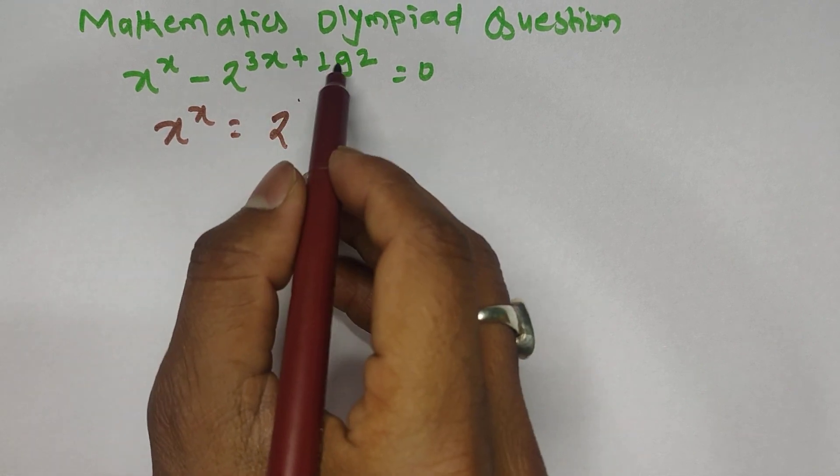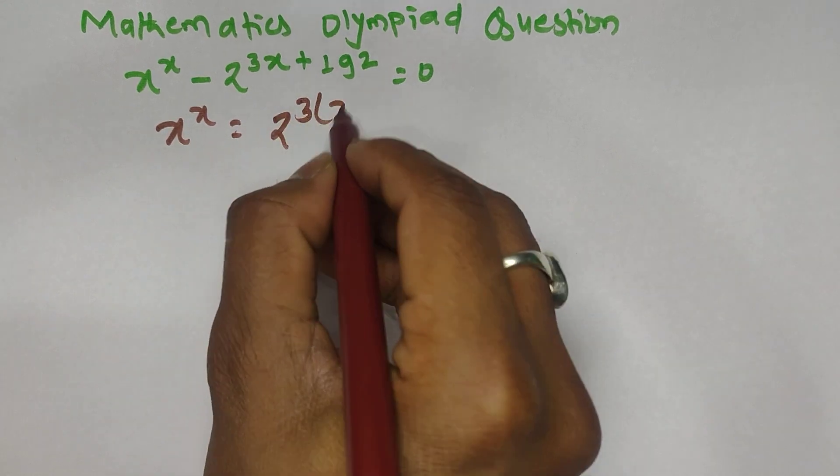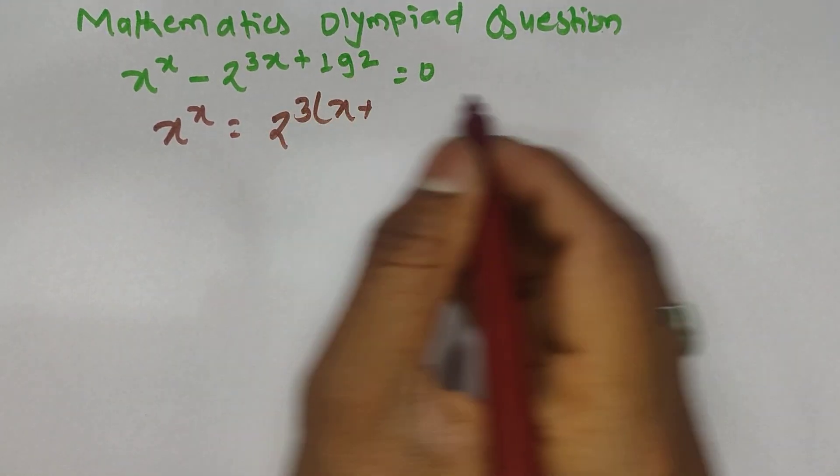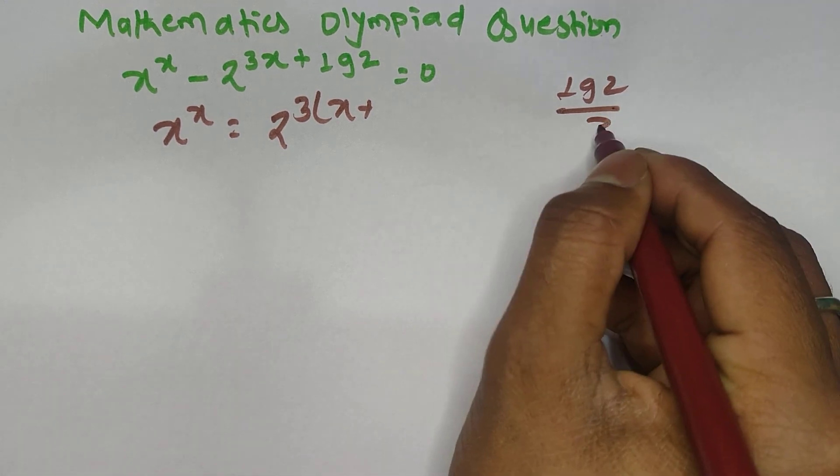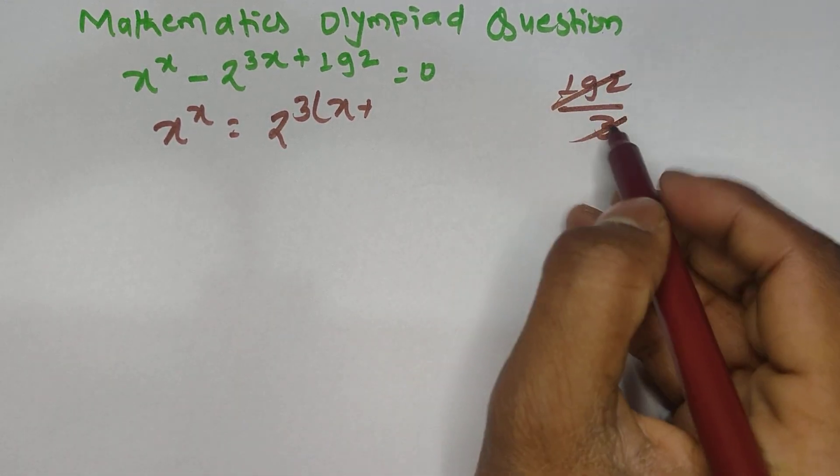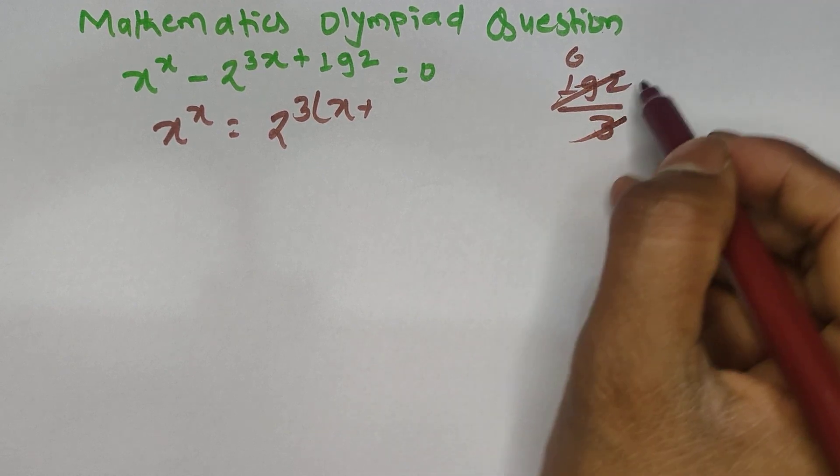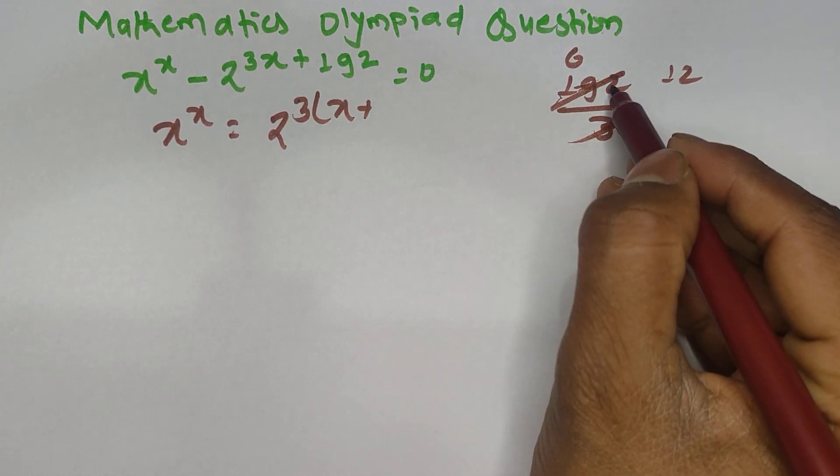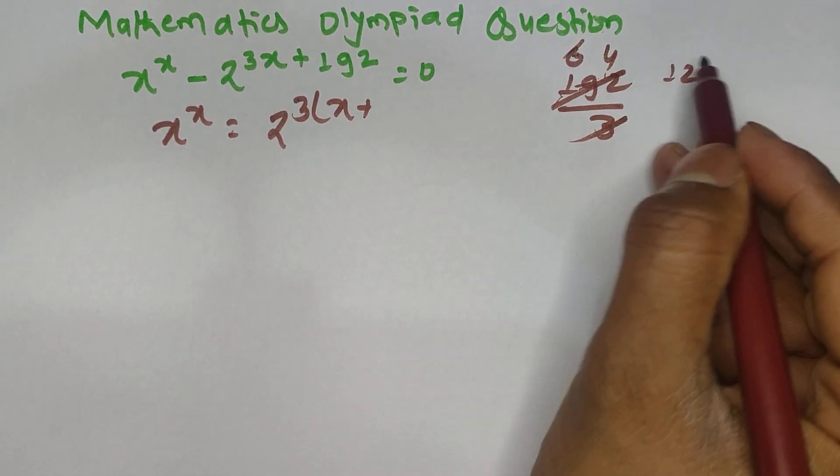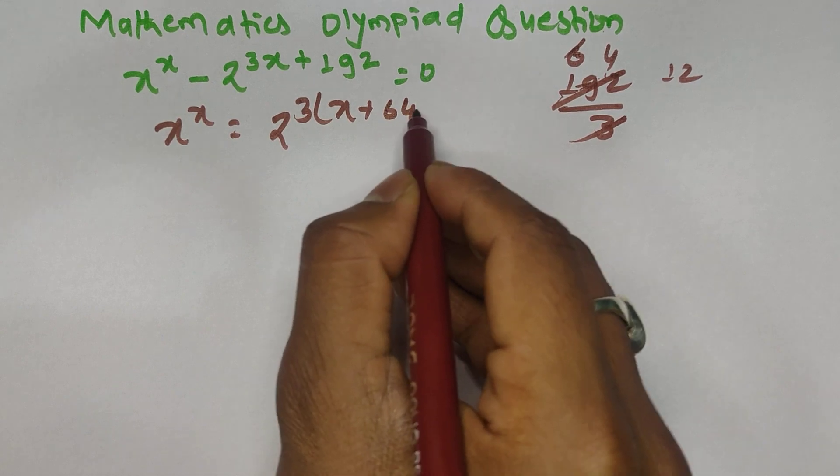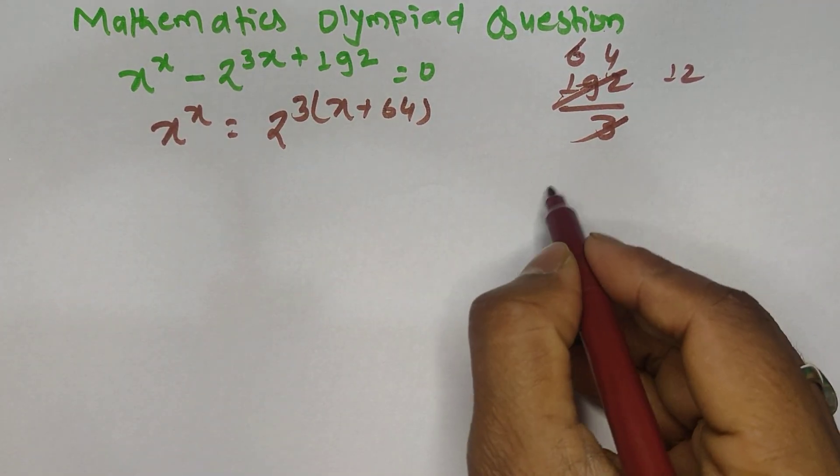We can take 3 as common because this number is divisible by 3. So let us take 3 as common, so the remaining is x plus... by dividing 192 by 3, we will get 6 times 3 becomes 18, and the remaining 1 becomes 12 from carry over. So 3 times 4 makes 12, and the remaining is 64.